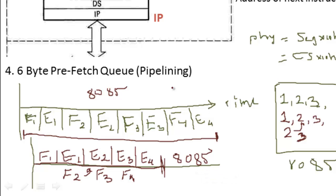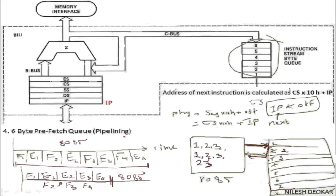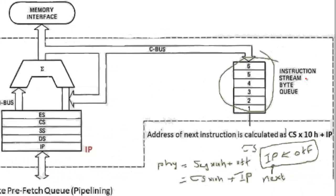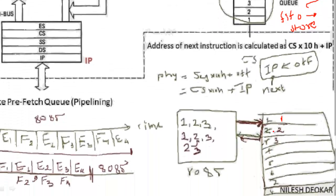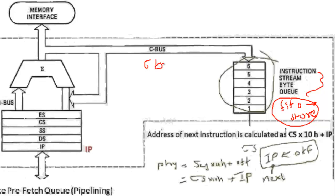This pipelining procedure increases the efficiency of the MUP. But to increase it further, we have one more concept — the instruction queue. We have six FIFO RAM locations available where we can fetch instructions in advance and store them. Say that currently we are executing the first instruction. As per the pipelining procedure we must fetch the second instruction, and after finishing the execution of the first we can immediately start the second. But this FIFO RAM gives the facility of fetching the next six bytes of instructions in advance. This means while executing the first instruction, the MUP will fetch the next six bytes of instructions.